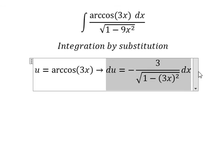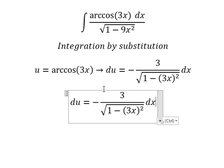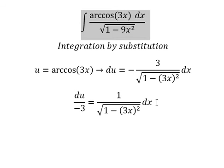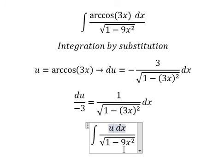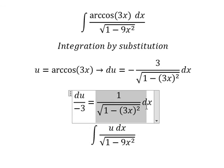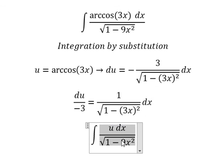Next, because we don't have negative number three in here, we need to divide both sides by negative number three. This one in here we change by U, x over the square root of 1 minus 9x². We change by dU over negative number three.